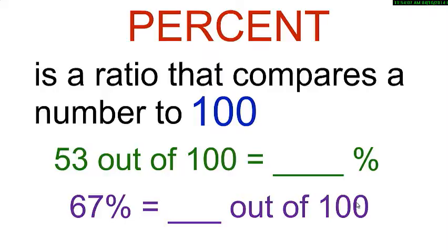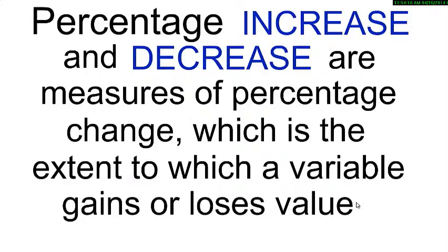53 out of 100 is equal to 53%. 67% means 67 out of 100. Percentage increase and percentage decrease are measures of percentage change, which is the extent to which a variable gains or loses its value.